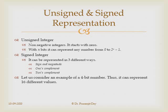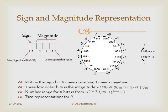Let us explain signed representations using a 4-bit number system, which can represent 16 different values. In signed magnitude representation, the MSB is the sign bit: 0 means positive, 1 means negative, and the remaining three lower-order bits represent the magnitude. So 0000 means 0 and 0111 means 7. The number range for n bits is from −(2ⁿ⁻¹−1) to +(2ⁿ⁻¹−1). For n=4 the range is −7 to +7. The drawback of signed magnitude is two representations of 0.